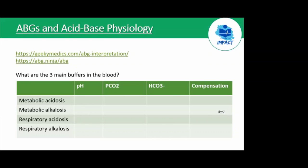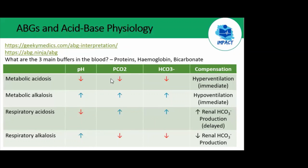In the interest of time, the general trend is: with metabolic acidosis or alkalosis, pH and PCO2 go in the same general direction. Whereas with respiratory acidosis and alkalosis, they go in opposite directions. That's a key distinguishing feature when reading an ABG.